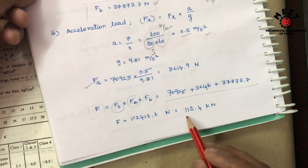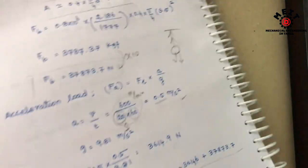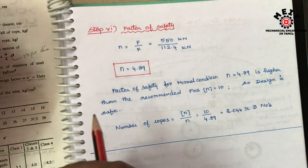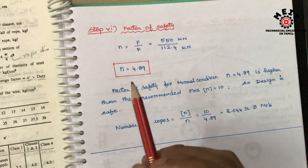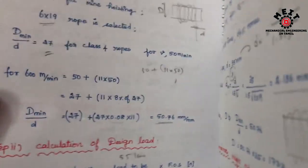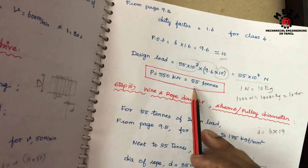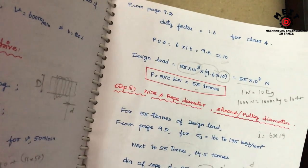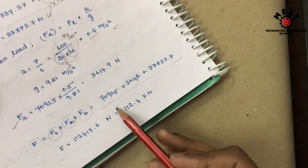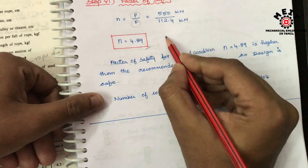Total load acting on the rope is 112.4 kN. The final step is calculation of factor of safety. Factor of safety = design load / total load acting on the rope = 550 kN / 112.4 kN = 4.89.